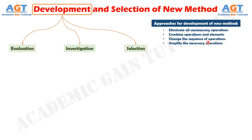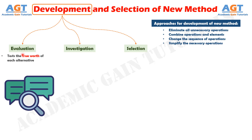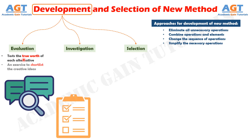Now, let's look into the steps involved in the development and selection of a new method. Step 1: Evaluation. The evaluation phase tests the true worth of each alternative and thereby decides whether an idea should be pursued or discarded. It is, therefore, an exercise to shortlist the creative ideas.